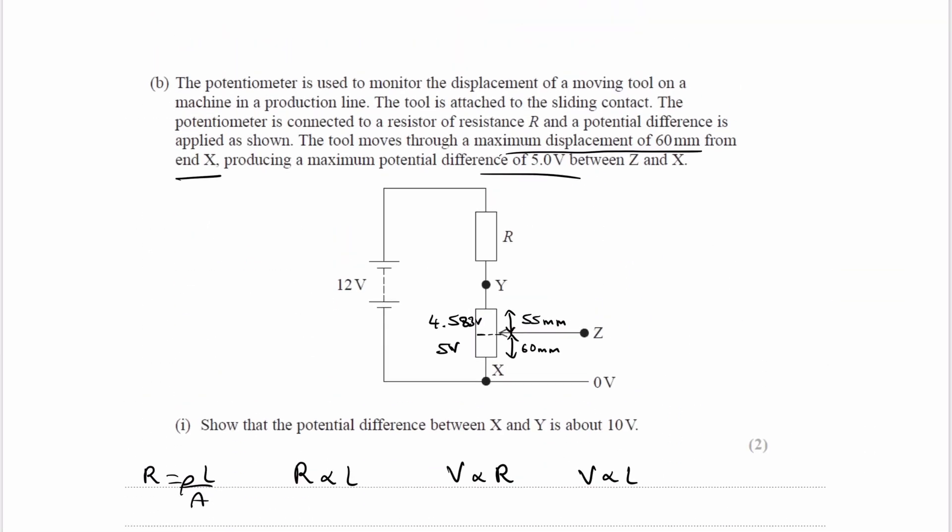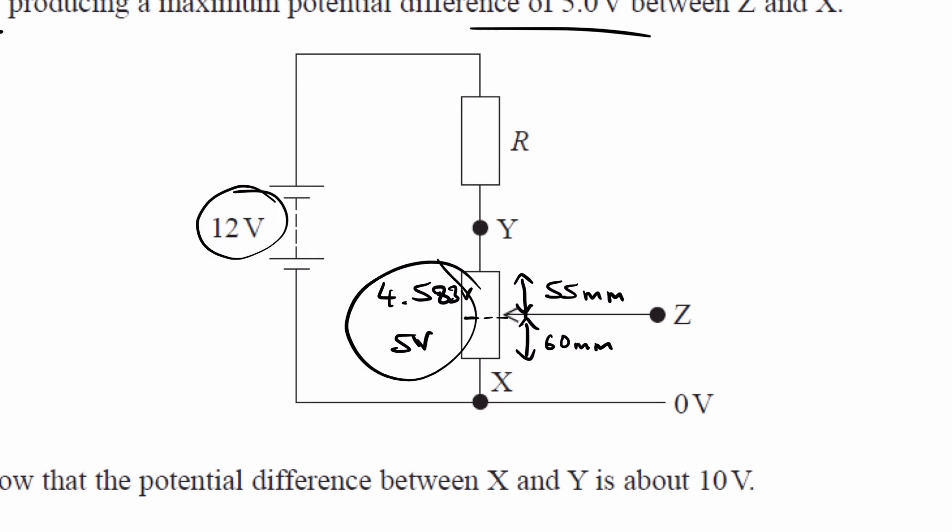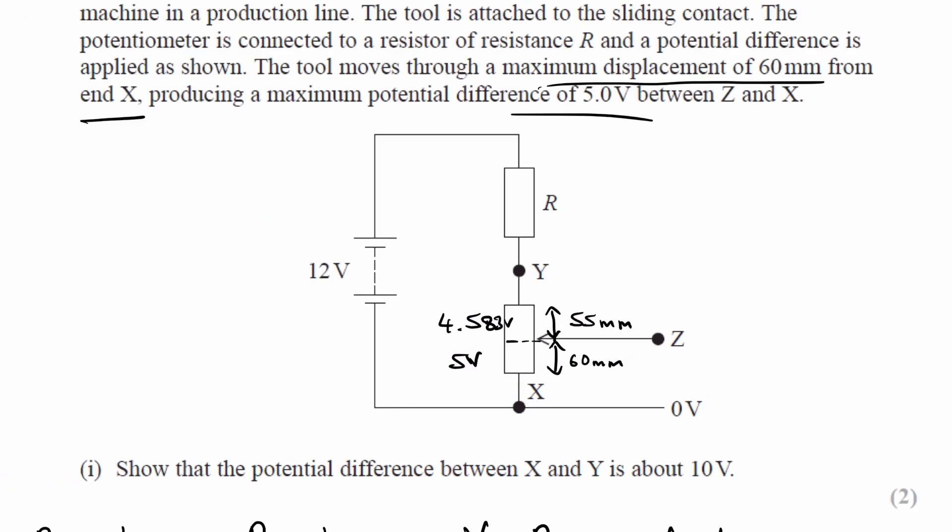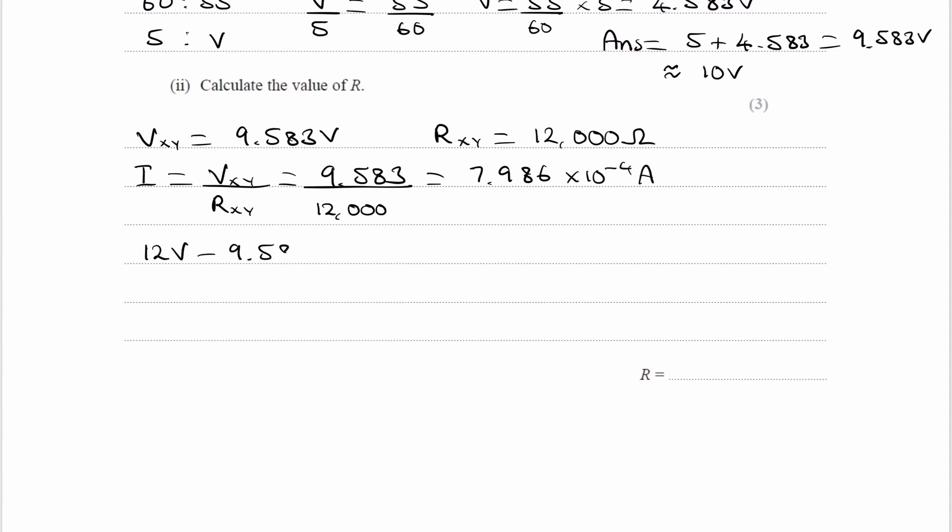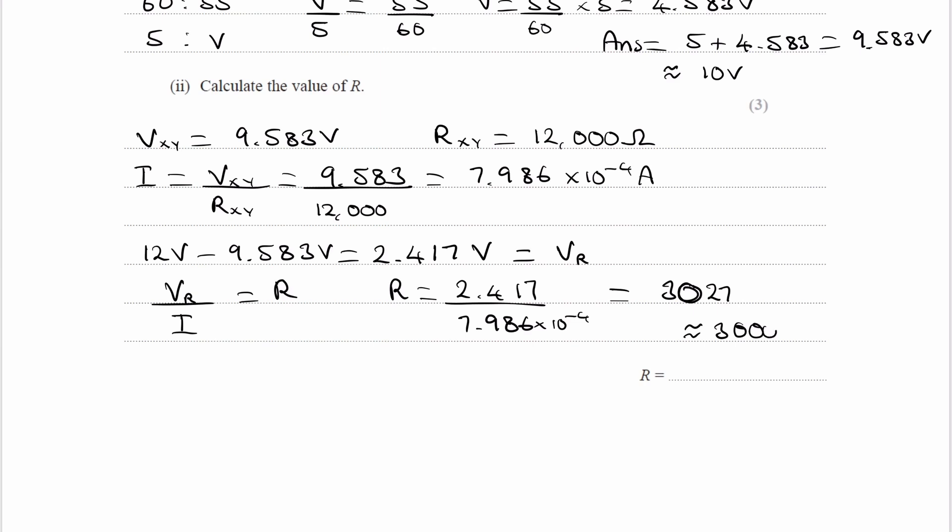We can use the voltage across the other component. We have 12 volts here and 9.6 volts roughly there. If we do 12 minus the 9.6, we get the voltage there. So 12 volts minus the 9.583 gives us 2.417. This is the voltage across the resistor. If we divide the voltage across that resistor by the current, we end up with the resistance. The resistance will be 2.417 divided by the current, 7.986 times 10 to the minus 4, which gives us 3,027, about 3,000 ohms. That will be our answer.